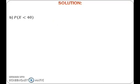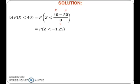To find probability of x less than 40, first change normal distribution to standard normal distribution by using formula x minus mu over sigma. Here we get probability of x less than 40 equals to probability of z less than negative 1.25. After that, draw a bell-shaped graph with zero at the center. Plot negative 1.25 on the graph, draw a vertical line and shade the region of probability that we want to find. Because we want to find probability of z less than negative 1.25, the region would be to the left of negative 1.25.